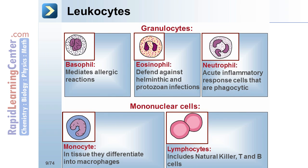There are two types of leukocytes, namely the granulocytes and mononuclear cells. Typically, there are between 4,000 to 10,000 leukocytes per microliter of blood. The granulocytes include basophils, which mediate allergic reactions, are the least common granulocyte, and their granules contain heparin, histamine, and leukotrienes. Eosinophils defend against helminthic and protozoan infections, are highly phagocytic for antigen-antibody complexes, and produce histaminase and arylsulfatase. Granulocytes also include neutrophils, which are acute inflammatory response cells that are phagocytic, and their granules contain hydrolytic enzymes such as lysozyme, myeloperoxidase,